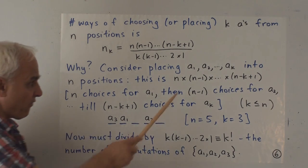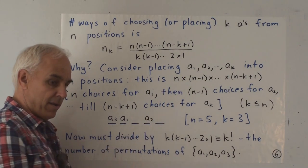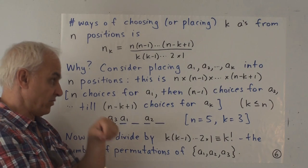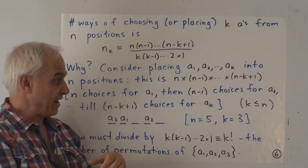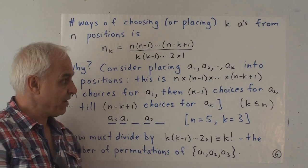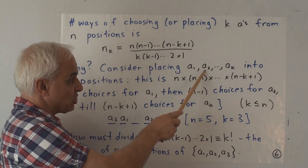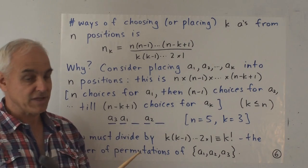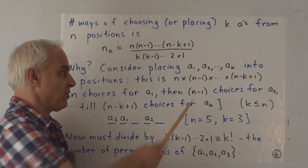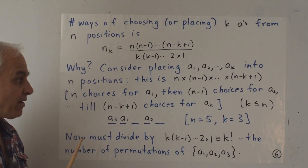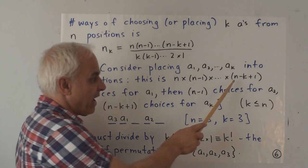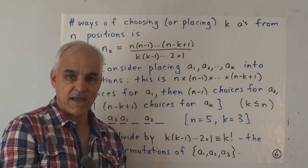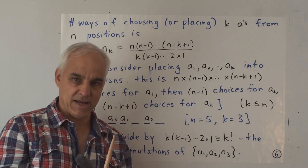So the k a's are now labeled a1, a2, up to ak. And we're going to agree to place a1 first, and then a2, and then all the way up to ak. That's easier to count, because the number of ways of placing a1 in these n positions is n. And then once we've placed a1, there are then n minus 1 free spaces left. So there's n minus 1 possible choices to put a2. And then after that, there's n minus 2 places to put a3, and so on,